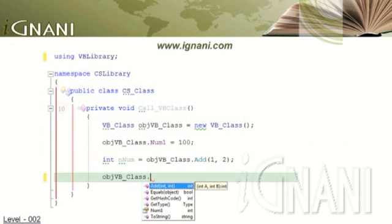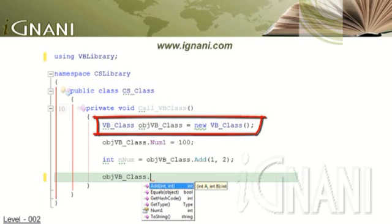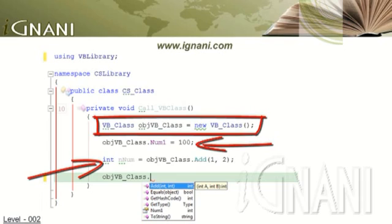This code is written in C-Sharp. You can see that an object named objvb_class is declared and initialized. It is of type VB_class — the same VB_class you saw previously, which was written using VB.NET. Using this object, we are able to access the property num1 and also assign a value to it. We can also call the methods provided by objvb_class.